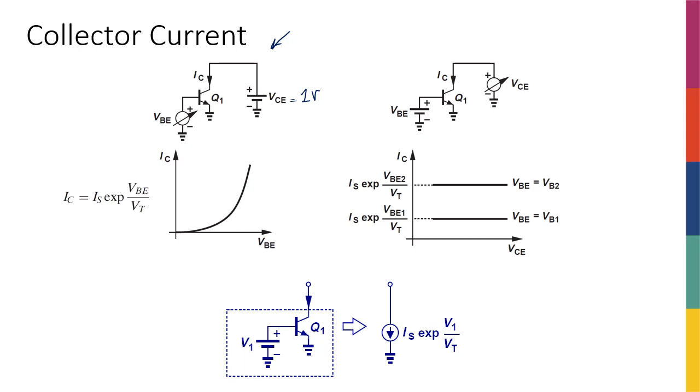So now I'm interested in the current in the collector, which I know is the current that is going all the way from the collector, passes the base, and goes to the emitter. So this is the current that I'm interested in that is going from collector to the emitter, and I want to know how is it related to the voltage at the base, or to be more accurate, the voltage across the base emitter junction, VBE.